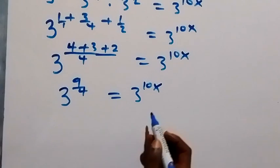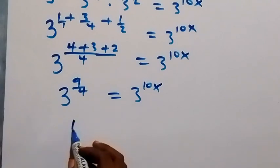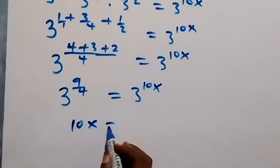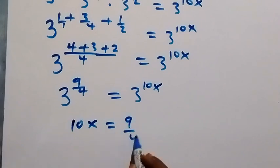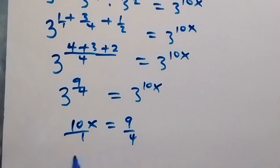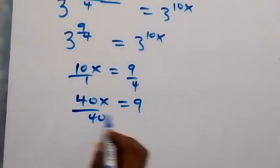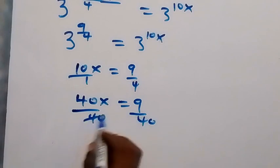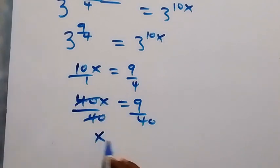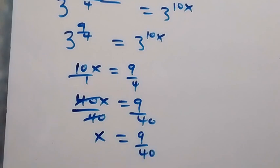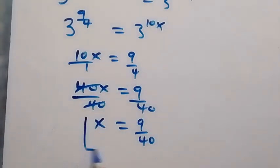When we equate the powers, we have 10x equals 9 over 4. Cross-multiplying: 40x equals 9. Dividing both sides by 40, the 40 cancels and we have x equals 9 over 40, which is the same answer as from the first method.